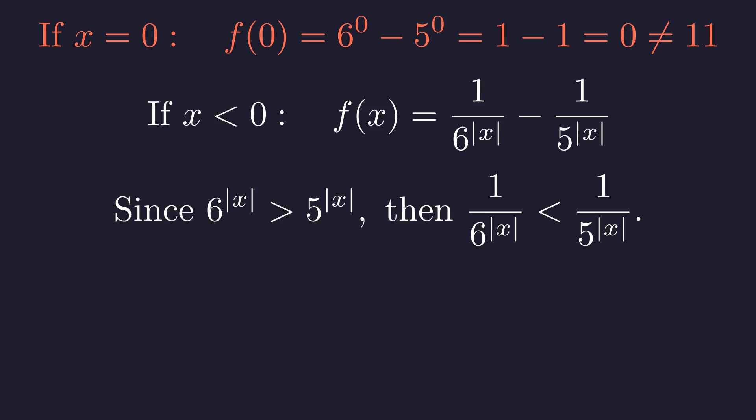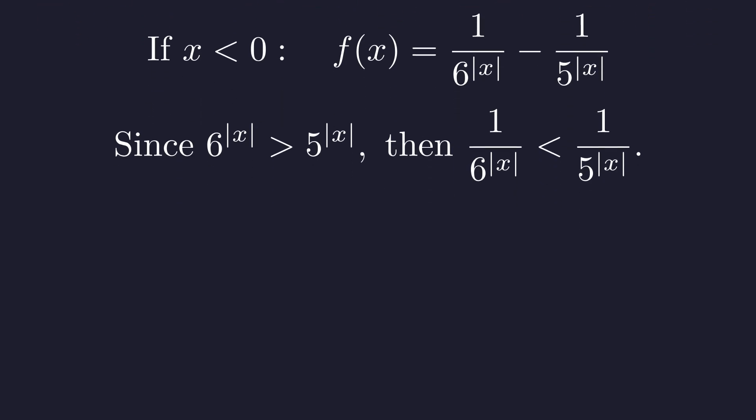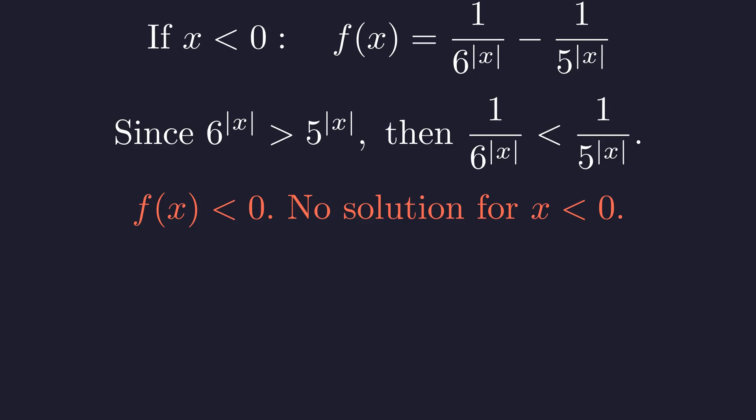So 1 over the bigger number is actually smaller than 1 over the smaller number. This means we're subtracting a larger value from a smaller one, and that means our function is always negative when x is negative. Since 11 is positive, there's no way a negative function value could ever equal 11.